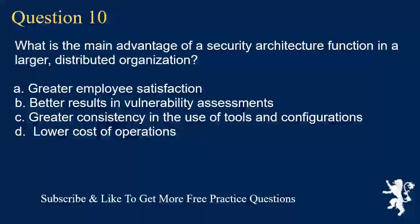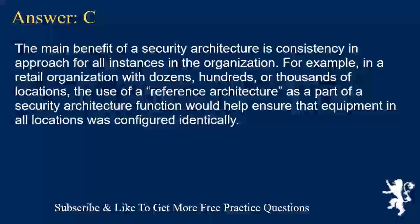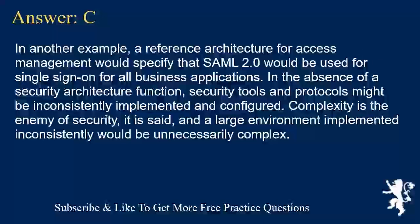Question 10. What is the main advantage of a security architecture function in a larger distributed organization? A. Greater employee satisfaction. B. Better results in vulnerability assessments. C. Greater consistency in the use of tools and configurations. D. Lower cost of operations. Answer C. The main benefit of a security architecture is consistency of approach for all instances in the organization. For example, in a retail organization with dozens, hundreds, or thousands of locations, the use of a reference architecture would help ensure that equipment in all locations was configured identically. A reference architecture for access management would specify that SAML 2.0 would be used for single sign-on for all business applications. In the absence of a security architecture function, security tools and protocols might be inconsistently implemented. Complexity is the enemy of security, and a large environment implemented inconsistently would be unnecessarily complex.